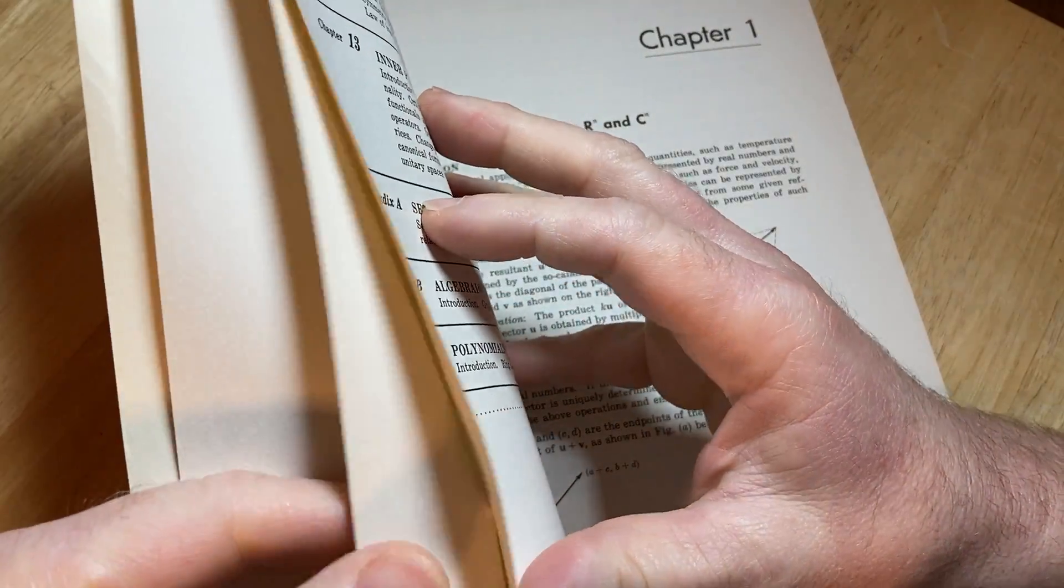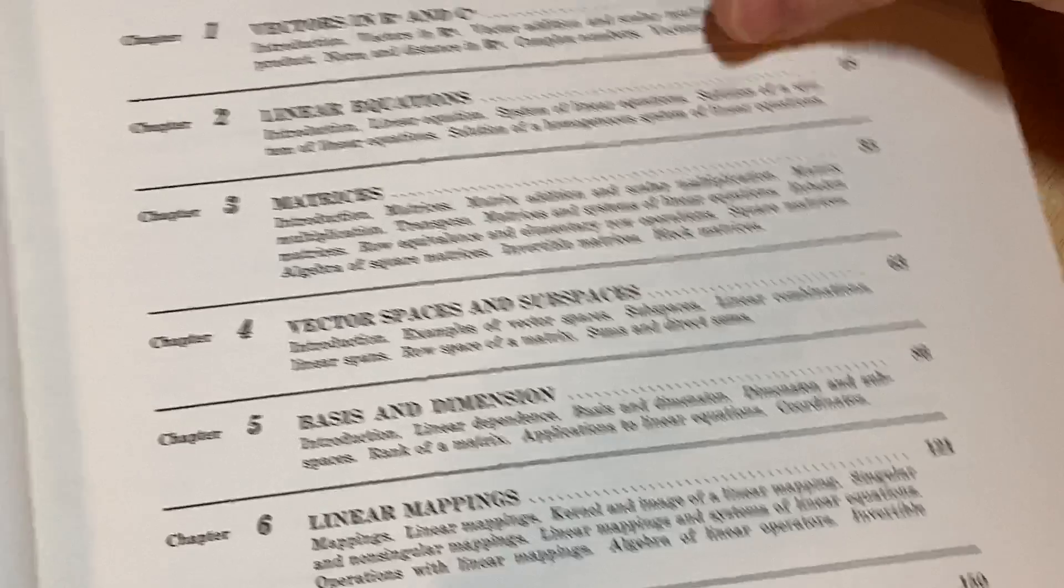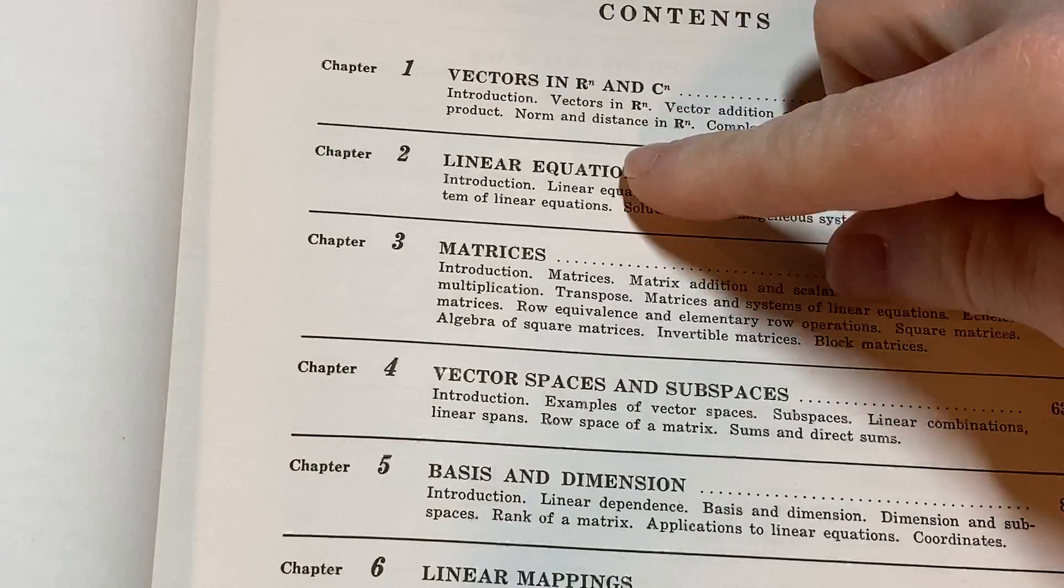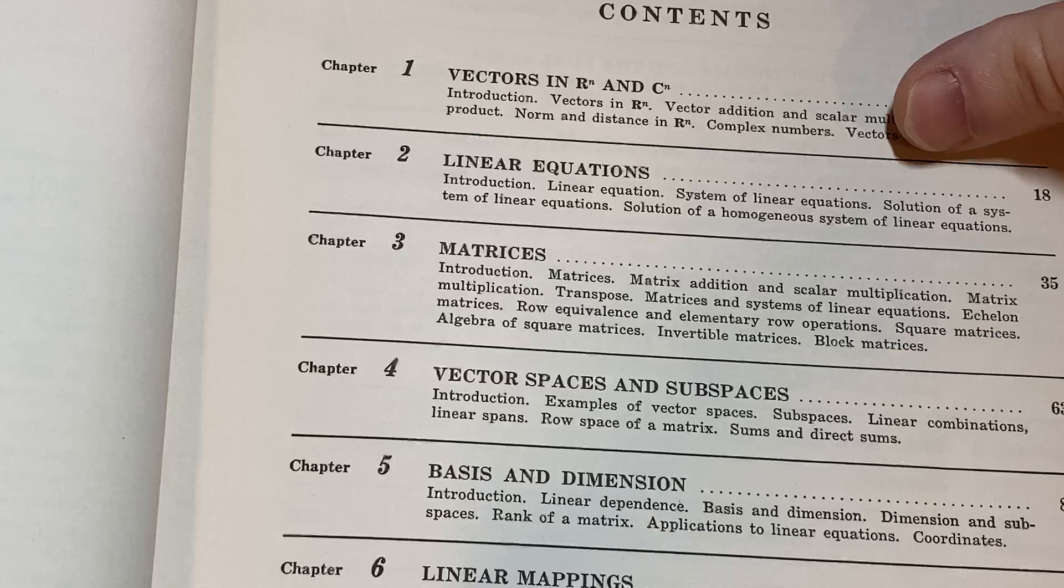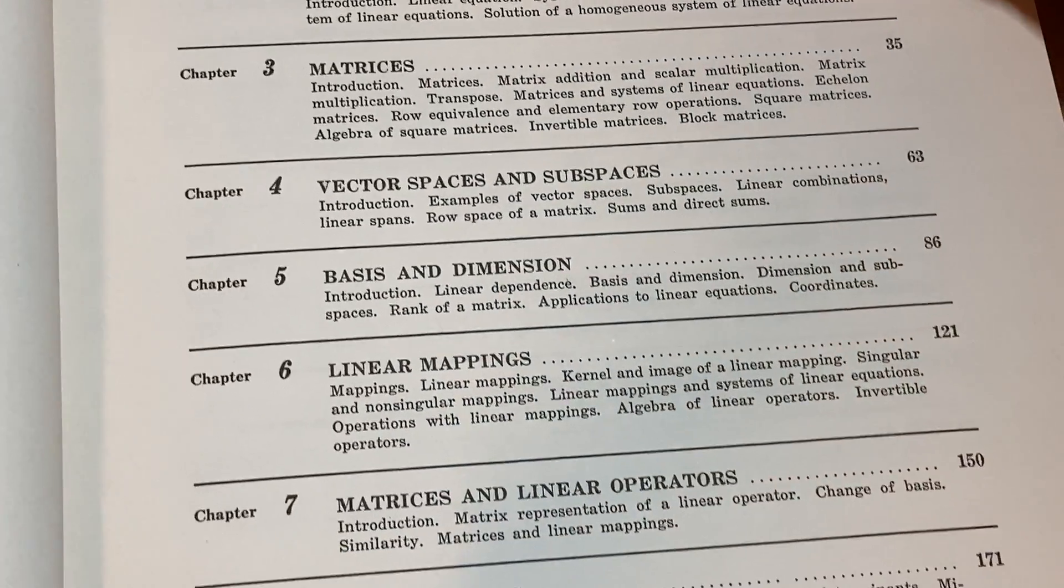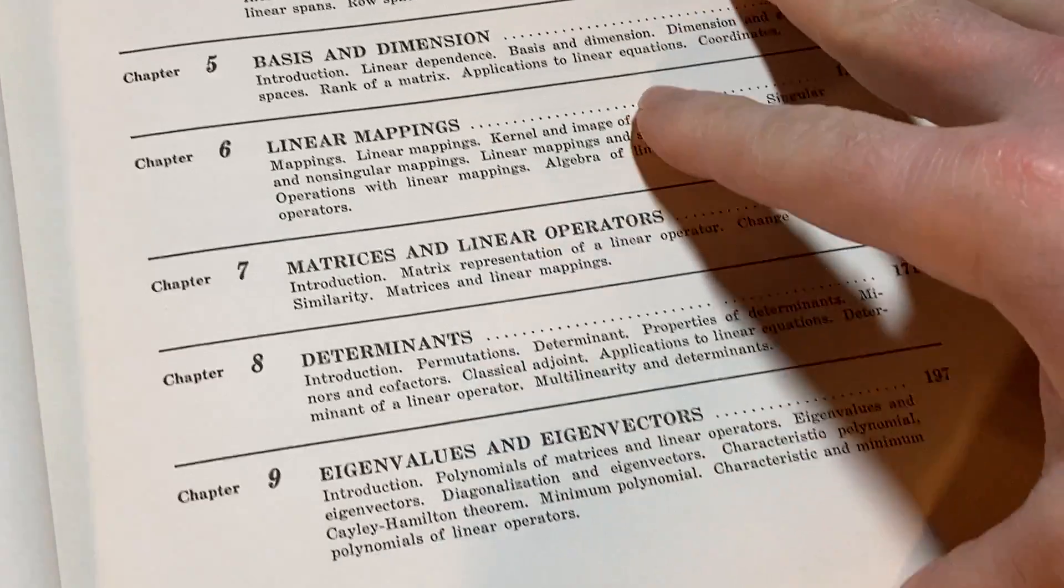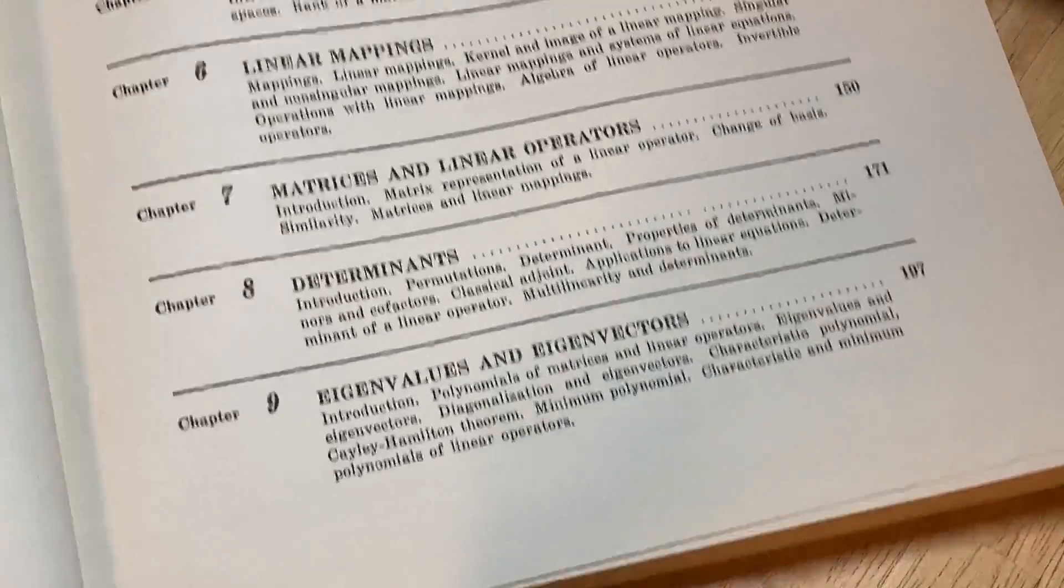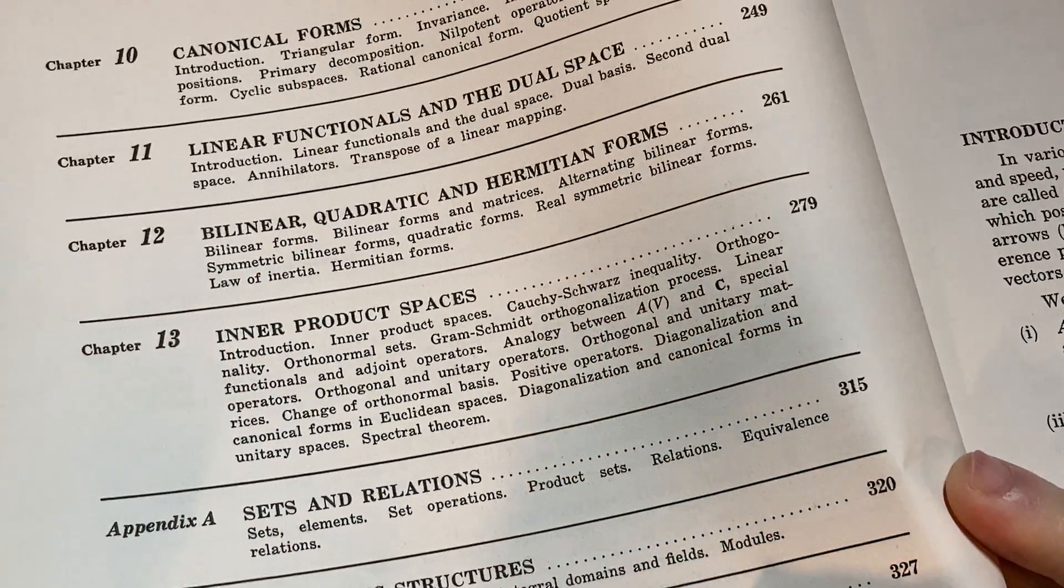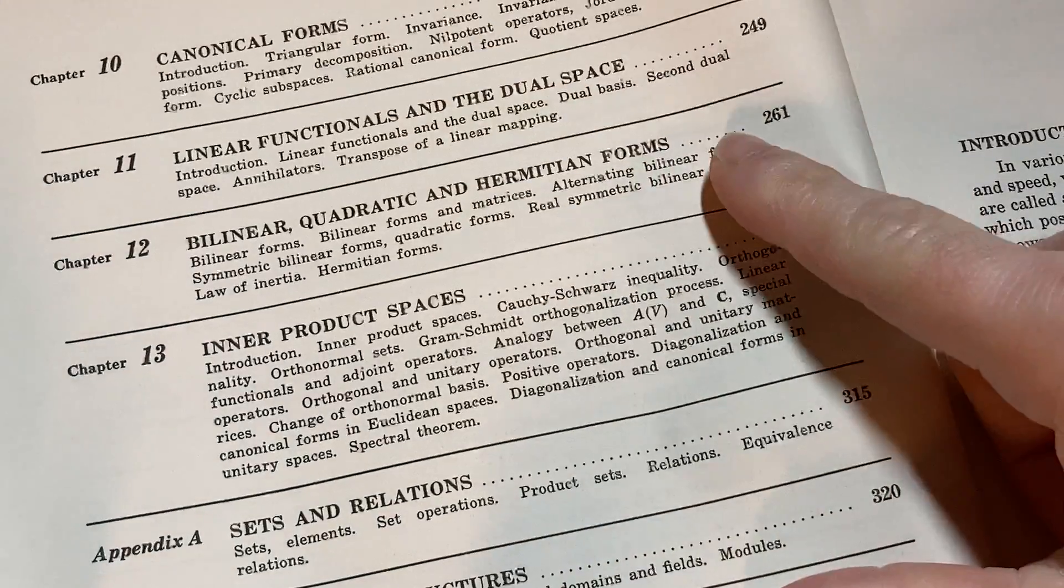So let's look at the contents here so you can see what it contains. So vectors in Rn and Cn, linear equations, matrices, vector spaces and subspaces, basis and dimension, linear mappings, so it's just basically linear algebra, matrices and linear operators, determinants, eigenvalues and eigenvectors, canonical forms, linear functionals, and the dual space. It does cover that, but not until chapter 11. Interesting.